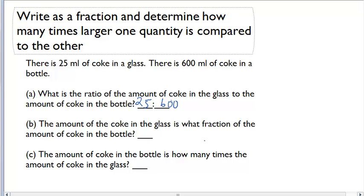Now, the amount of coke in the glass is what fraction of the amount of the coke in the bottle? And again, we can write this ratio that we just wrote as a fraction, and I can say 25 over 600.